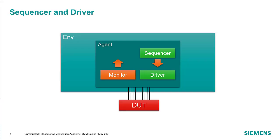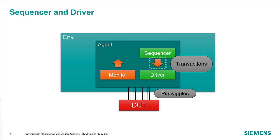In our agent setup, we have a sequencer and a driver. The driver's job is to communicate at the pin level to the DUT — the driver wiggles the pins. But what we really want in UVM is to communicate things at the transaction level. So we use transactions as abstract packets of information, and this is how we communicate from the sequencer to the driver, abstracting the information so we can focus on the problem in terms of reads and write transactions.